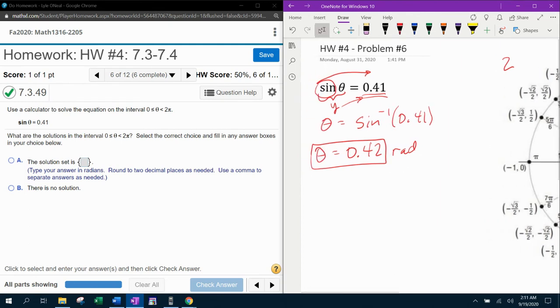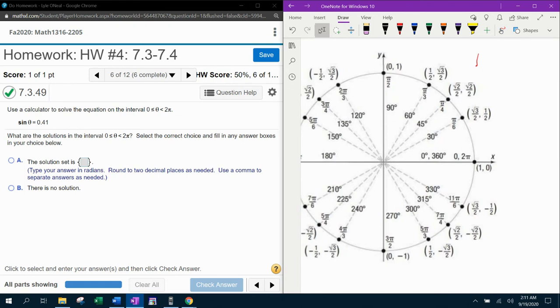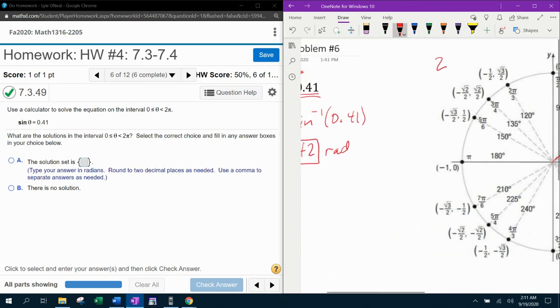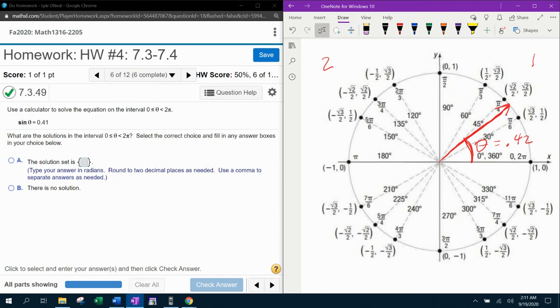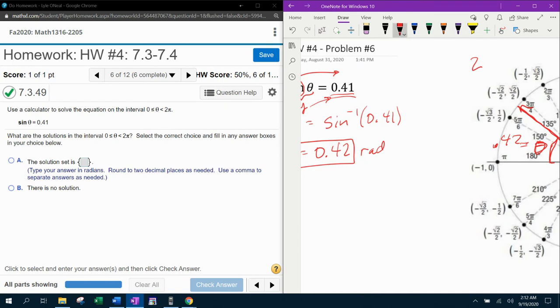This first radian angle that we found, that is our quadrant one angle. So if I sketch that out here, and again, I don't know exactly where it is. I'm just saying somewhere out here in quadrant one, we're going to have a radian angle of 0.42. And then since the second quadrant also has positive y coordinates, there will be an equivalent angle. What I mean by equivalent is it's going to have the same reference angle as quadrant one. This would also be 0.42 radians down to the x axis that will also produce the same positive value of 0.41.